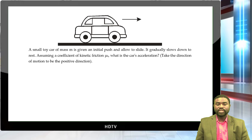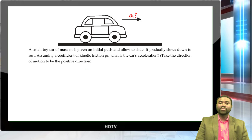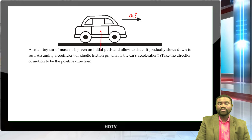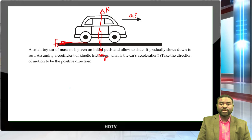The first question: a small toy car of mass M is given an initial push and allowed to slide. It gradually slows down to rest. Assuming the coefficient of kinetic friction is mu_k, what is the car's acceleration? Take the direction of motion to be the positive direction. The forces acting on the car are the weight mg, the normal force N, and the kinetic friction force f_k.